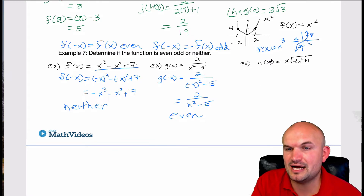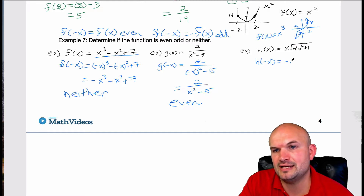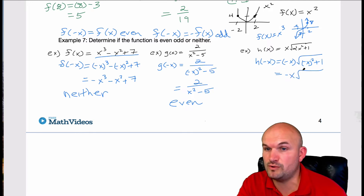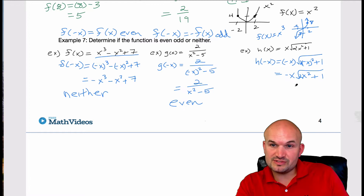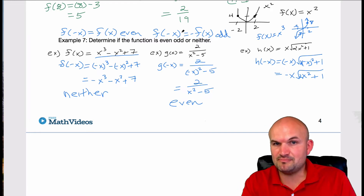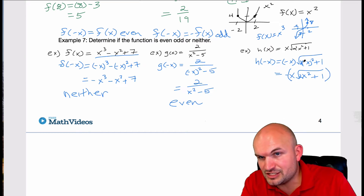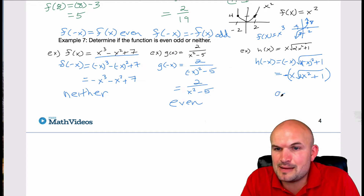Last but not least, let's check the symmetry of h(x). I'll plug in negative x, giving (−x)√((−x)² + 1). (−x)² is positive x², so this becomes −x√(2x² + 1) — I forgot there was a two there. What you see is this is the opposite of h(x): the inside is your original h(x), but it's being multiplied by a negative. So it's the opposite value. Therefore, this is an example of an odd function.